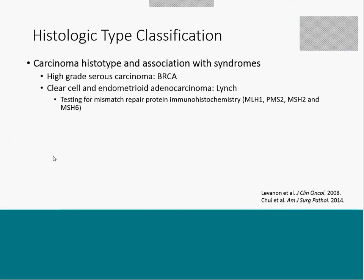One last note about histological type classification is that carcinoma histotypes are now also considered in terms of association with syndromes. High-grade serous carcinoma — 25% of these tumors are associated with a BRCA mutation. Clear cell and endometrioid carcinoma — about 10 to 20% of these tumors are associated with a germline mutation in mismatch repair genes, or Lynch syndrome. While it has not yet become standard to test all ovarian non-serous tumors with mismatch repair immunohistochemistry, this is a growing trend, and the protocol also refers to this testing.